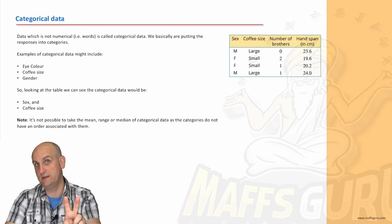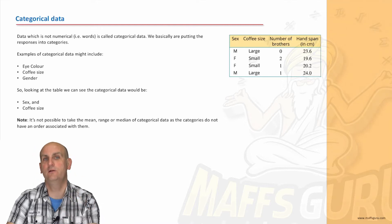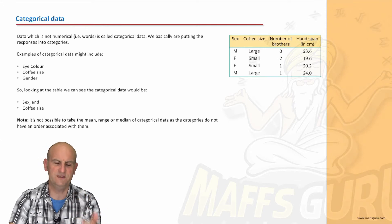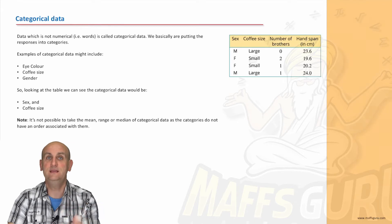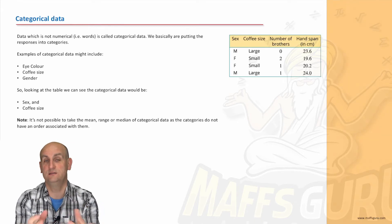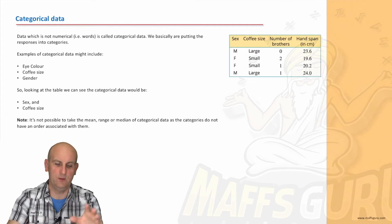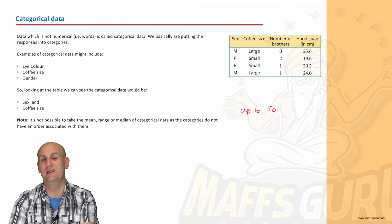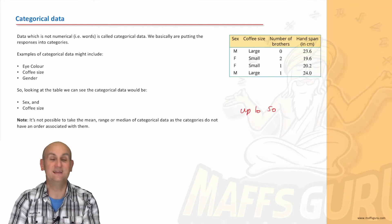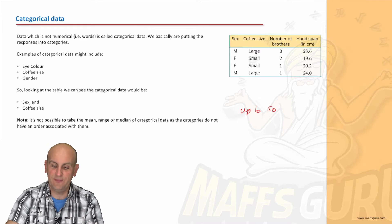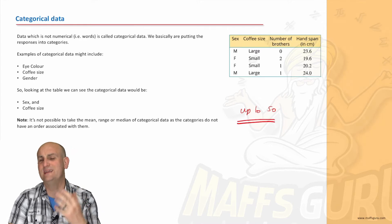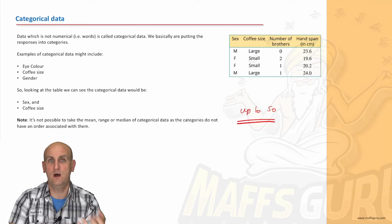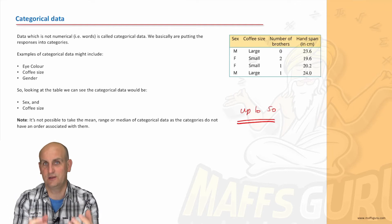Two types of data. We have categorical data and numerical data. Let's look at categorical data first, which is things like eye colour and coffee size and gender. These are data items that have words to describe them. Now, it's a little bit weird because, for example, if I have up to 50, that is categorical data. Yes, it has a number in it, but the fact that it's got up to 50 makes it categorical. It's got those words in it. My responses of male and female, large and small, categorical data.